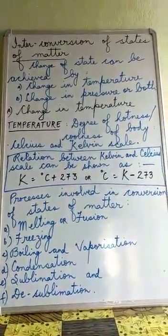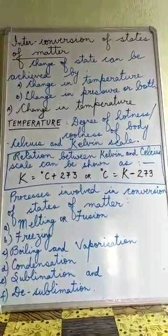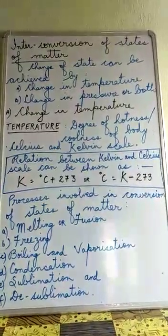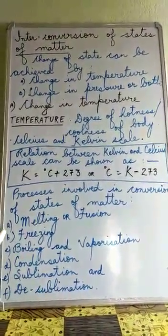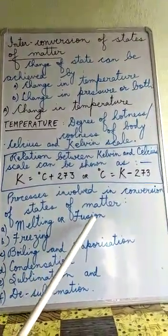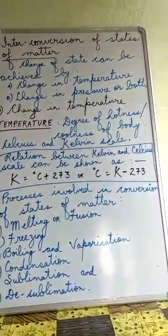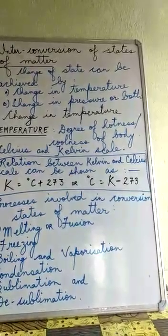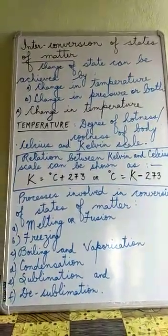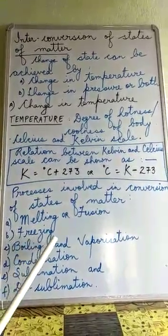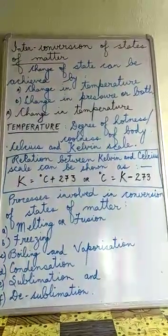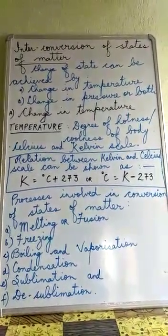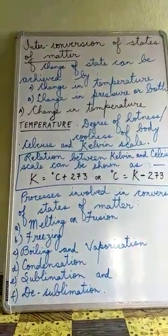Whenever we increase or decrease the temperature, we observe a change in the state of matter. The various processes involved in conversion of states of matter are: 1. Melting or fusion — the process in which the solid state of matter changes into its liquid state by heating. 2. Freezing — the reverse of melting; it is the process in which a liquid changes into solid, achieved by decreasing the temperature.